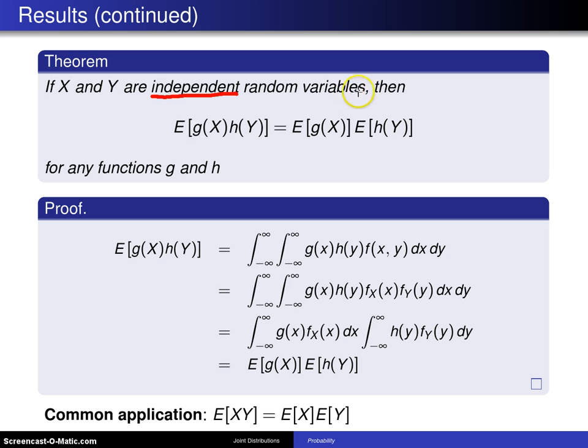They might be discrete or continuous. But in either case, the expected value of g of x h of y is equal to the expected value of g of x times the expected value of h of y when the expectations exist, for any functions g and h.